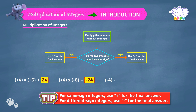Minus 4 into plus 6. To find the product of minus 4 and plus 6, we first find the product of 4 and 6, which equals 24. Here minus 4 is a negative integer and plus 6 is a positive integer, so we use minus for the answer. So the answer is minus 24.